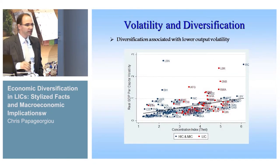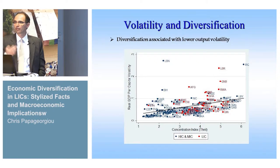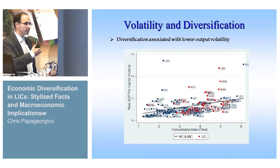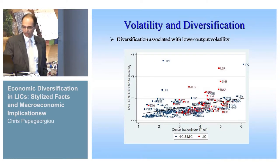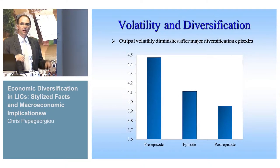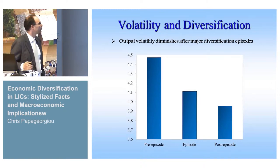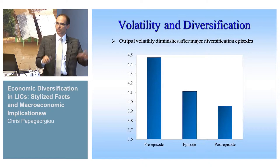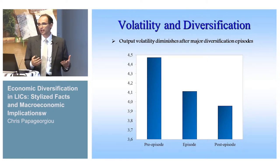The story extends to volatility as well. We do a similar exercise, but instead of growth on the left-hand side, we have a measure of volatility. We get a positive relationship between concentration and volatility, or an inverse relationship between diversification and volatility. We also perform the exercise with our newly developed diversification episodes, and what we find is that output volatility diminishes after major diversification episodes. This is very broad-brush analysis, but it responds to the big question of why the fund is interested — it is macro-critical, related to growth and volatility.